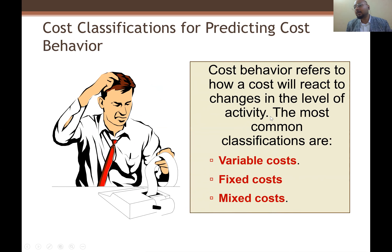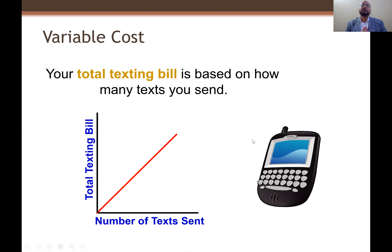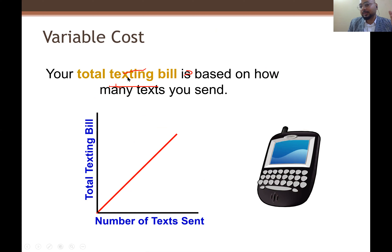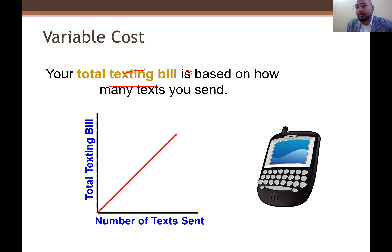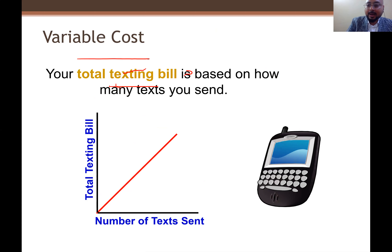Cost behavior refers to how a cost will react to changes in the level of production activity. The common types are variable, fixed, and mixed. For variable cost, take the example of texting — any message you send has a cost. If you send more messages, you pay more. If you produce 100 messages, you pay 100-message cost; if 10 messages, then 10-message cost.